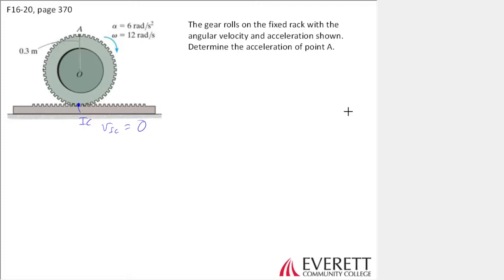What do we know about O? What do we know about the motion of O or the velocity of O? Alpha and omega apply to every point on this body because they are the angular velocity and angular acceleration of the entire body. But those are not velocities and accelerations. They're angular velocities and accelerations.